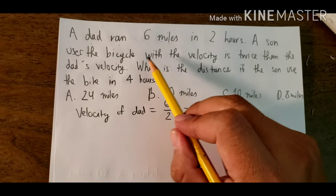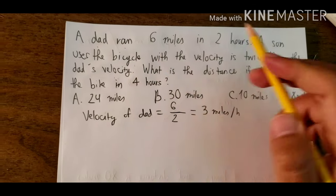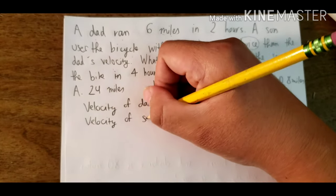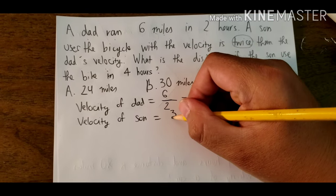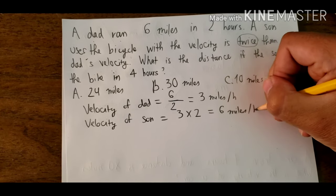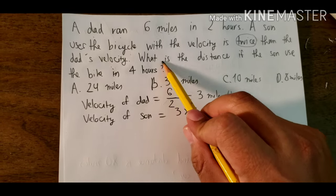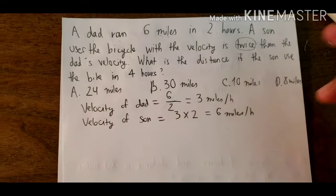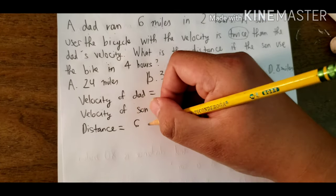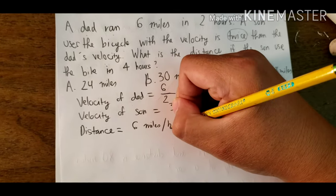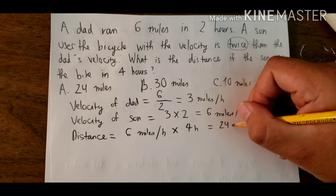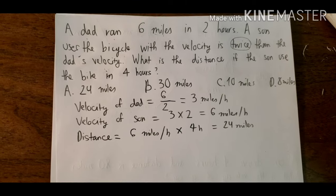The son used the bicycle at twice the dad's speed, so the son's velocity is 3 multiplied by 2, which is 6 miles per hour. The question asks: what is the distance if the son used the bike for 4 hours? We have the distance equals 6 miles per hour multiplied by 4 hours, giving us 24 miles. The answer is A.